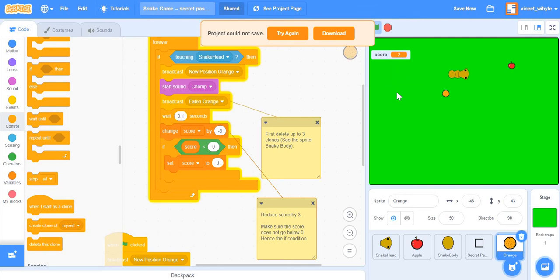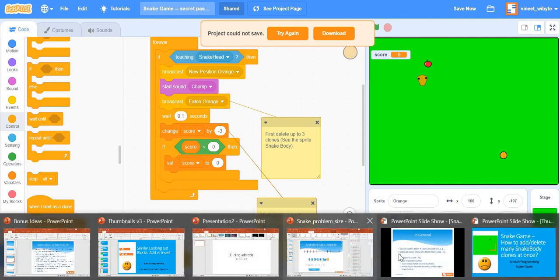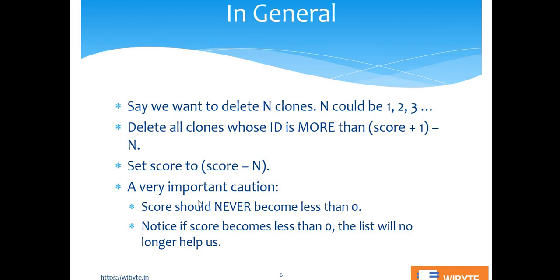The last but the probably the most important and somewhat tricky point of this whole thing is that at any given point, my score should not become less than zero. Remember, I'm reducing score by three. Let's say right now I've got only two clones in there, but how do I take away three? So, I'll take away both of these, but I will set the score back to zero. So, if I change score by minus three, score will become negative. If I did that, my entire list indexing, everything will go off. So, I just bring it back as though the game has just started. I set the score back to zero. And this is the last point I want to make that set the score back to zero. Very important caution. Score should never become less than zero. So, if it becomes less than zero, the list will no longer work with us. And you can think about this. It kind of falls in place.